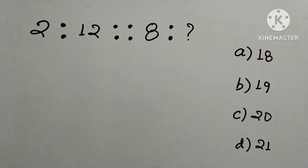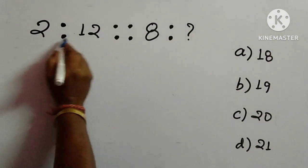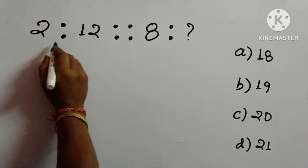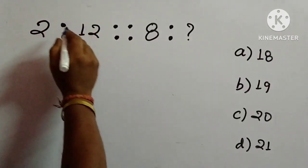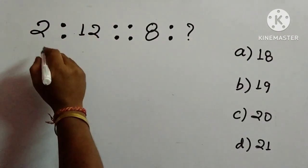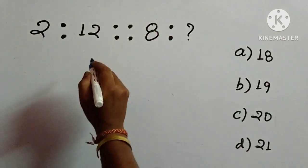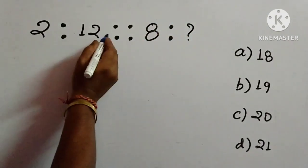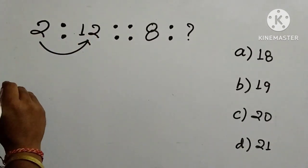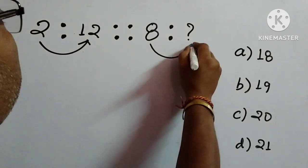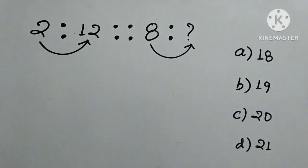This is a question of number analogy, and we will look at how we solve number analogy. This number analogy question has two parts. The left-hand side is the first part and the right side is the second part. We try to solve the first part, and once we have done that, we implement the same process in the second part to get the answer. In this part, we try to get 12 out of 2, and then implement the same technique to get the answer from 8.